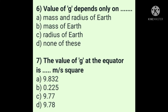Question 6: Value of g depends only on — answer is option A: mass and radius of earth. The value of g depends on the mass and radius of the earth. The formula is g = G × M / R², where M is the mass of the earth and R is the radius of the earth.